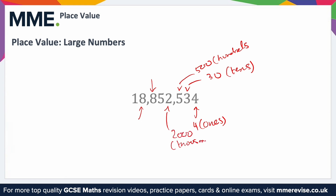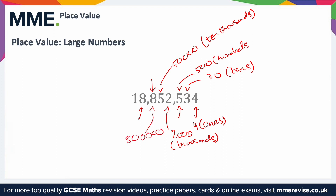The 5 here — notice it's different from the other 5 — represents 50,000, that's 5 with 4 zeros, because it's in the ten thousands column. The 8 represents 800,000, that's 8 with 5 zeros, because it's in the hundred thousands column.